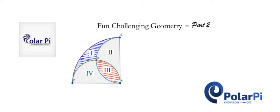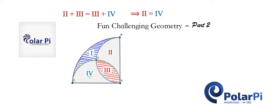If you'd like, pause it and think about it, but I'm going to start sharing the solution here. To start, observe that the area of region two plus the area of region three is equal to the area of region three plus the area of region four. It looks pretty obvious from the picture, but let's state it formally. By cancellation, we can conclude that the area of region two is equal to the area of region four.